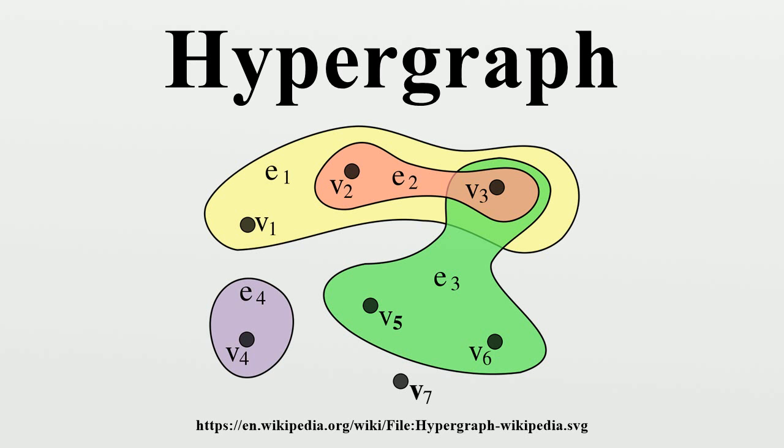Consider, for example, the generalized hypergraph whose vertex set is and whose edges are and. Then, although, it is not true that.